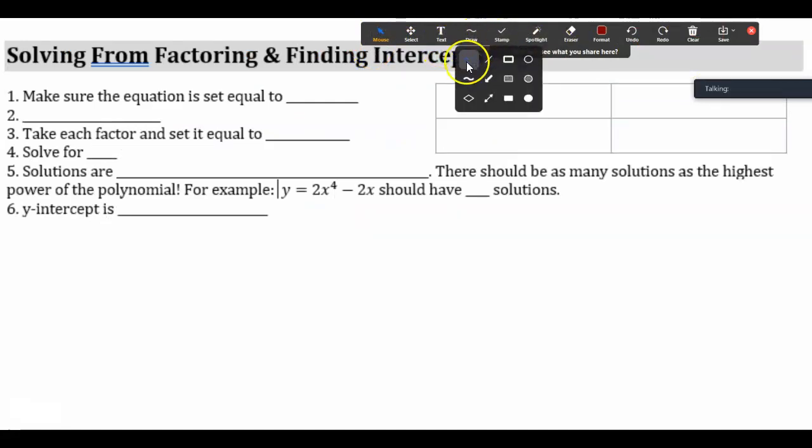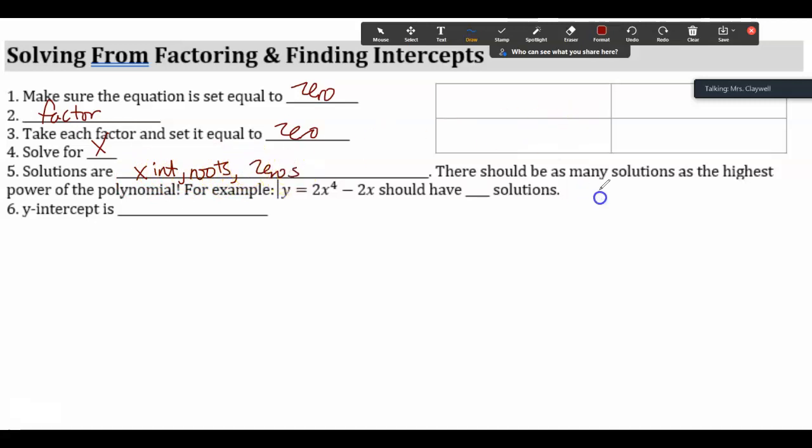So this is what this could look like if there's two variables. Solving from factored form and finding the intercepts. We're going to start graphing a little bit to make sure the equation is set equal to zero. Then we want to factor. Then we want to take each factor and set it equal to zero. Solve for X. Solutions are X-intercepts, roots, zeros are all the words we use to describe these. So there should be as many solutions as the highest power. For example, 2X to the fourth minus 2X squared, there's four there, so we should have four solutions. The y-intercept is the constant at the end, and it may be zero.